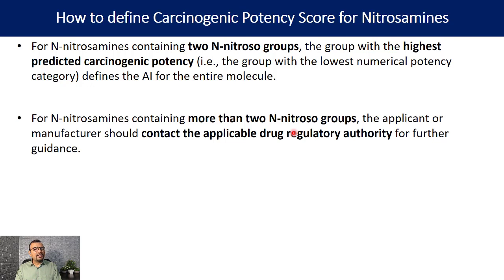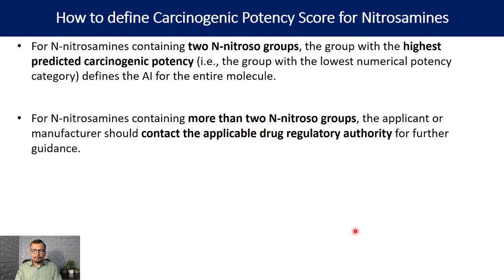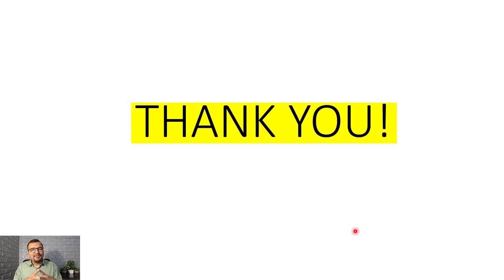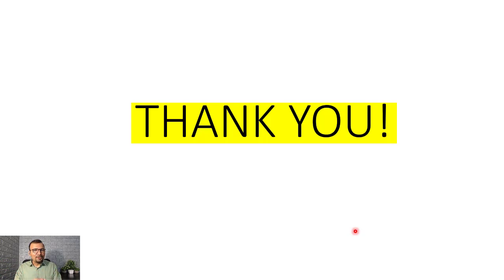For nitrosamines containing more than two nitroso groups — maybe three or four — the applicant or manufacturer should contact the applicable drug regulatory authority for further guidance. This is the information provided in EMA's Q&A document published on 7th July 2023. In the next video, we will talk about how to categorize nitrosamines according to categories one through four. Thank you.